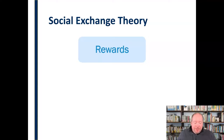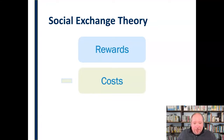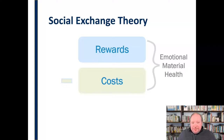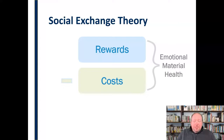We look at different types of rewards, but we also have to balance that with: what is this relationship costing me? So we take the rewards and subtract the costs. These can be emotional, material, or health-related. Relationships carry all these different types of things as rewards and costs, depending on which side of the coin you're on. So relationships bring us emotional rewards, material rewards, and health rewards, but they can also have a subsequent cost in these areas.